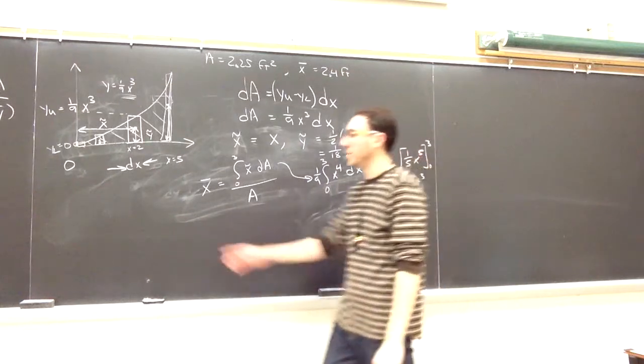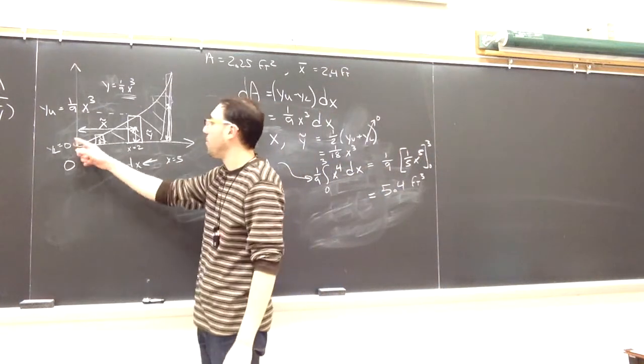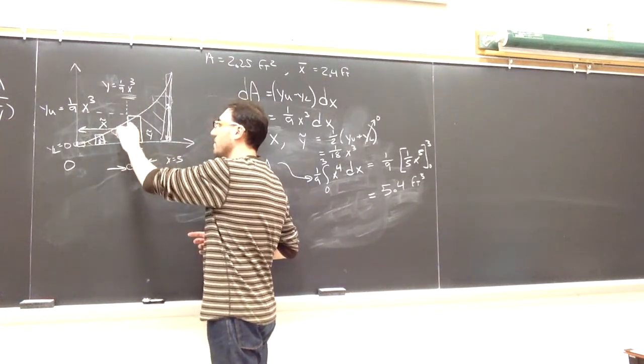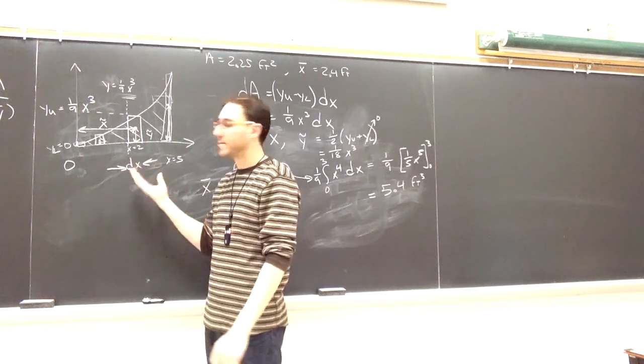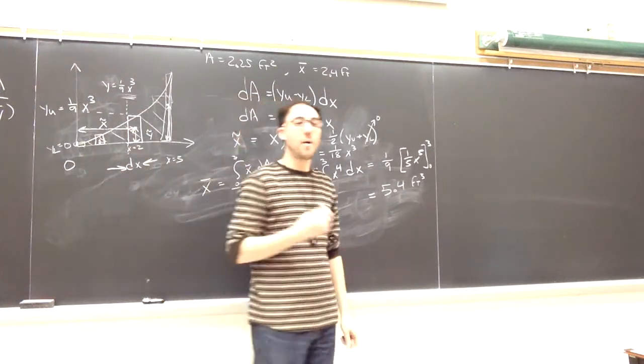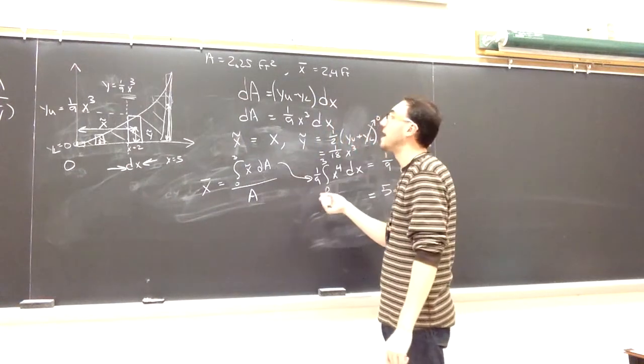So if I go to the origin and I go to the right by 2.4 feet, that is going to be, I'll kind of draw it to scale here, right around here, this is approximately about there. Now I want to find the y location as my last step. It's really the same process to find y bar.